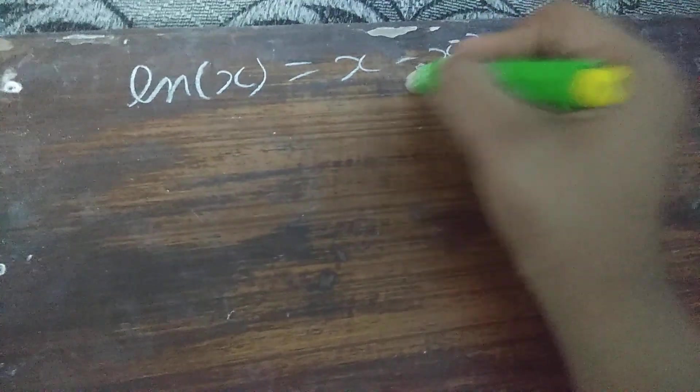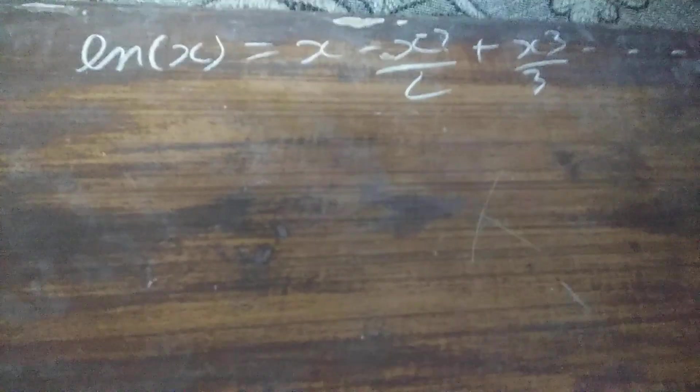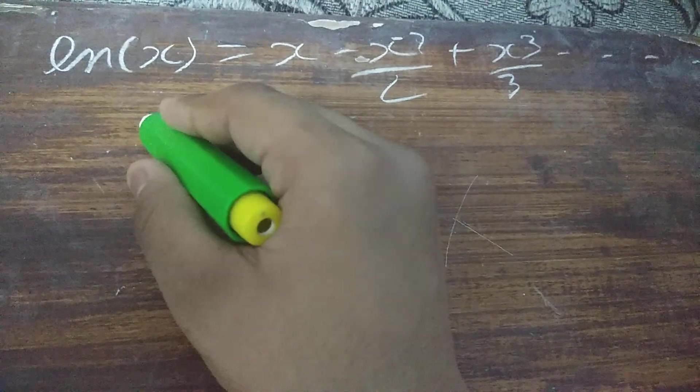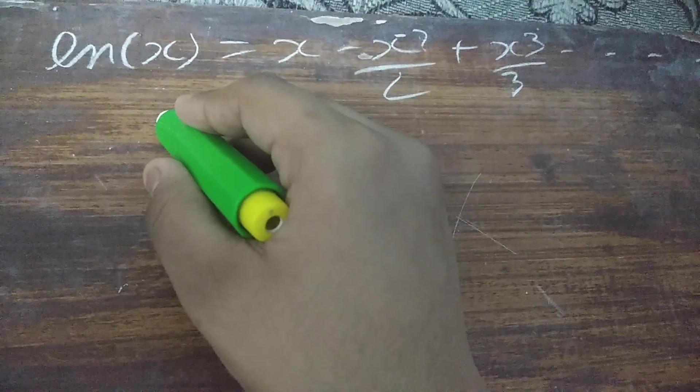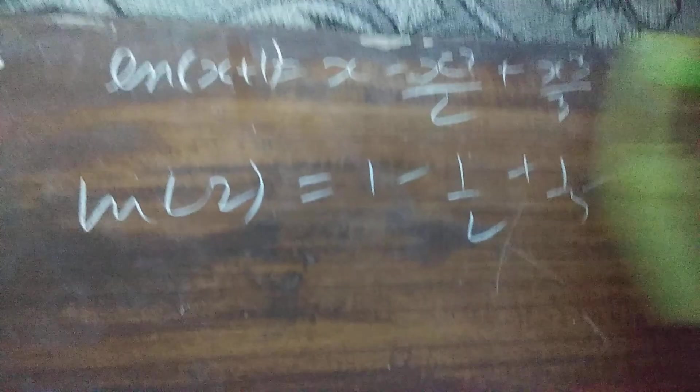How? By Taylor series or Maclaurin series. ln(x+1) equals x - x²/2 + x³/3 dot dot. If you want to see how I got this, I have a video on it, please check it out. Putting 2... sorry, ln(x+1), and ln(2) is that.